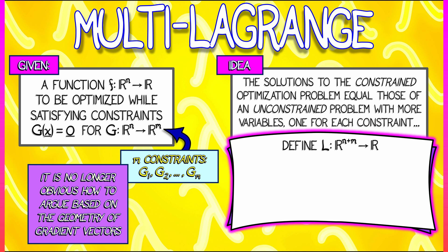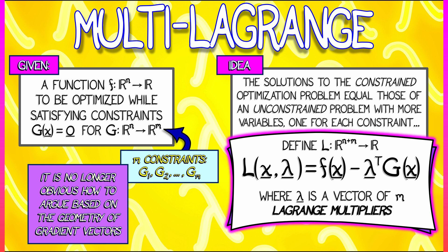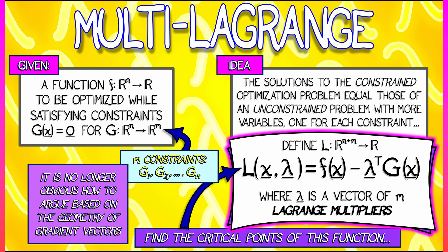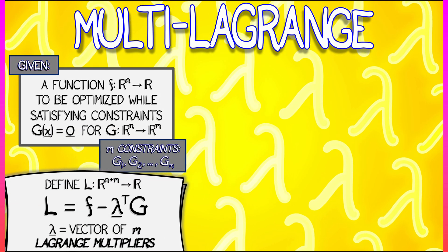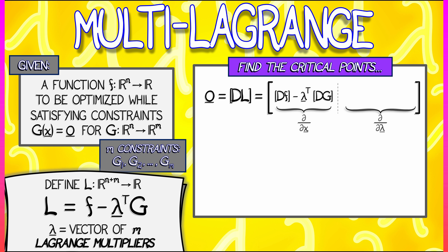We're going to define the Lagrangian, L, that goes from R^(n+m) to the reals, with x variables and lambda variables as inputs, where there are m Lagrange multipliers. Lambda is a vector of m variables, and this Lagrangian L is simply f minus lambda dot g — or if you like, you can write that in terms of the transpose. Now we need to find the critical points of this Lagrangian L. We just take the derivative and set it equal to zero. Our function L has two types of inputs: the x variables and the lambda variables. Taking the partials with respect to the x variables gives us the derivative of f minus lambda transpose times the derivative of g.